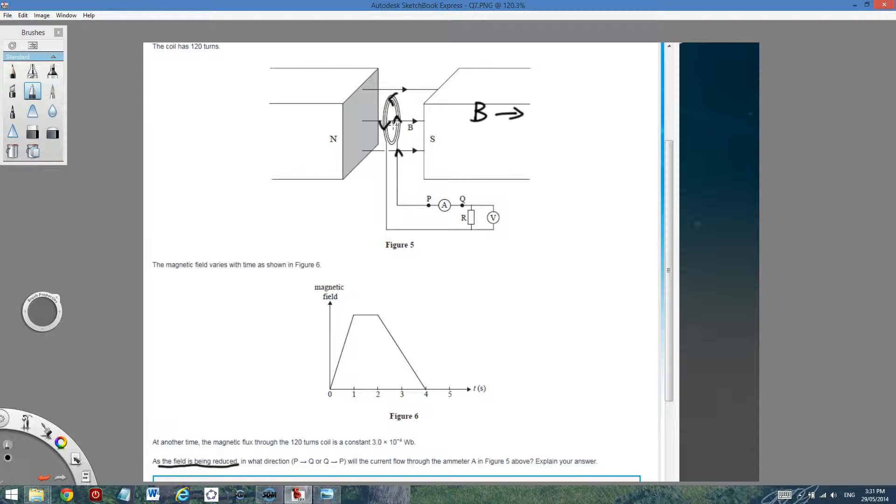So there is a magnetic field to the left generated by the loop. If you trace that direction, you can see that the current actually travels from Q to P through the diameter.